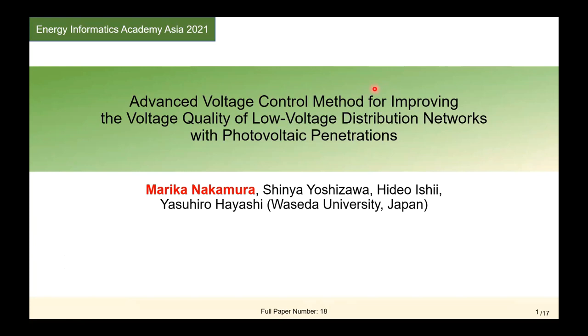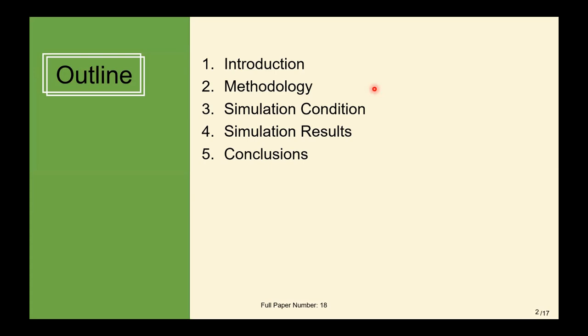Today I will talk about my research advanced voltage control method for improving the voltage quality of low-voltage distribution network with photovoltaic penetration. In this research we propose a method to optimize the control parameters of OLTC and PV inverters to reduce the voltage violation amount in a distribution system with PVs. And I will also discuss the simulation results to verify the effectiveness of this proposed method.